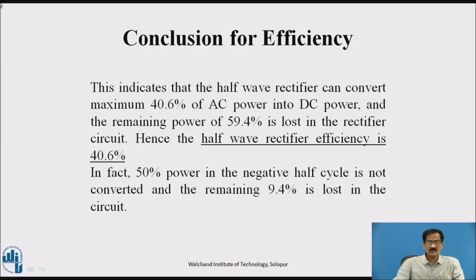Conclusion for efficiency: This indicates that the half-wave rectifier can convert maximum 40.6% of AC power into DC power, and the remaining power of 59.4% is lost in the rectifier circuit. In fact, 50% power in the negative half cycle is not converted and the remaining 9.4% is lost in the circuit.